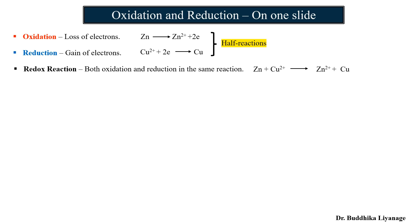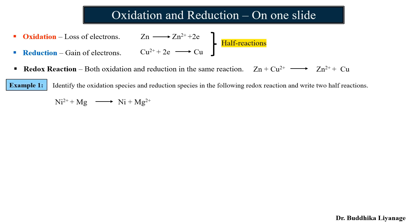Example one: identify the oxidation species and the reduction species in the following redox reaction and write the two half reactions. In this given redox reaction there are two species on the reactant side: Ni²⁺ and magnesium. Let's take one chemical at a time and see how the charge changes from reactant to product side.